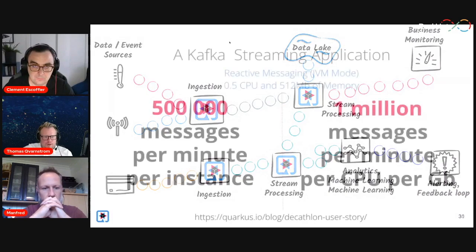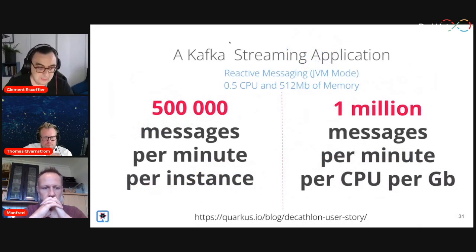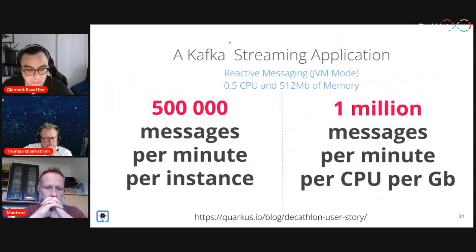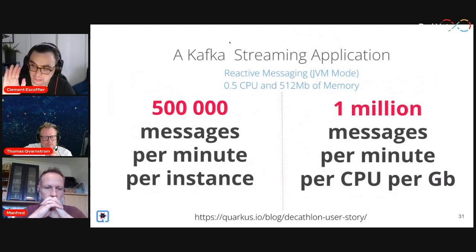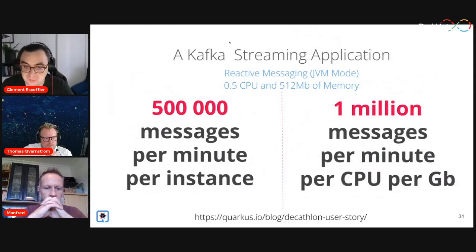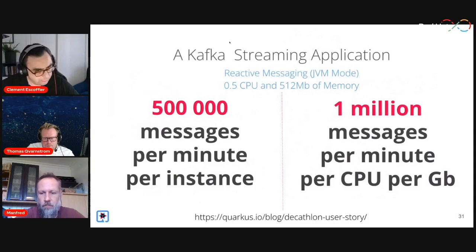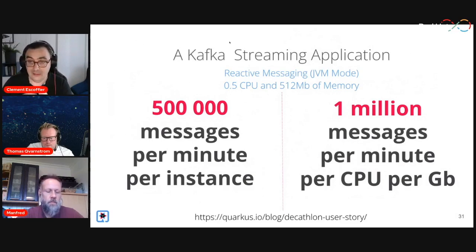One of the things is that Quarkus is based on a reactive core, and our main event-driven technology is named reactive messaging. A key aspect is the scalability and elasticity it can bring. These numbers are from Decathlon, a sports retailer chain: using reactive messaging in JVM mode — not native — with half a CPU and 512 megabytes of memory deployed in OpenShift, they were able to handle one million messages per minute, per CPU, per gigabyte of memory. This is true high density. With our technology, you'll have fun developing — it's easy, with live reload, easy deployment to OpenShift or Kubernetes — and very good performance.